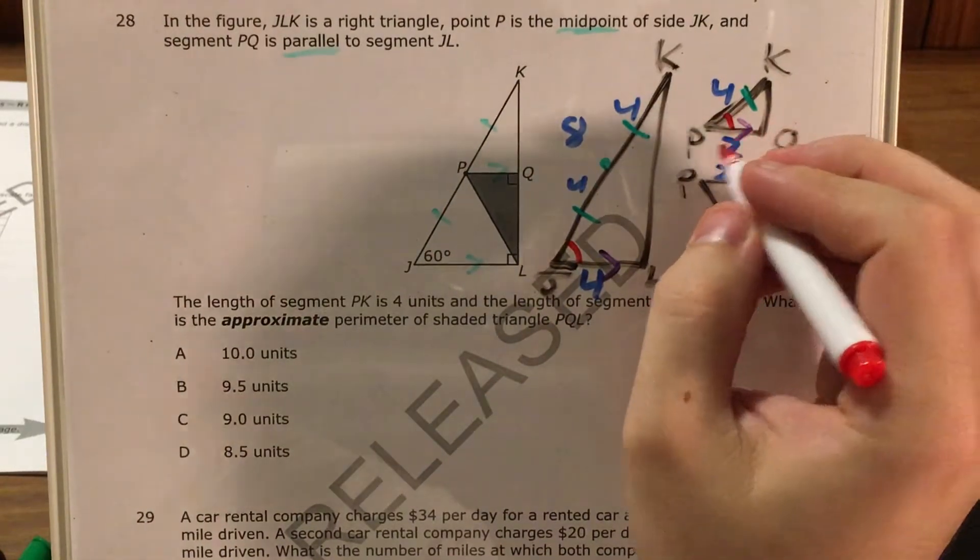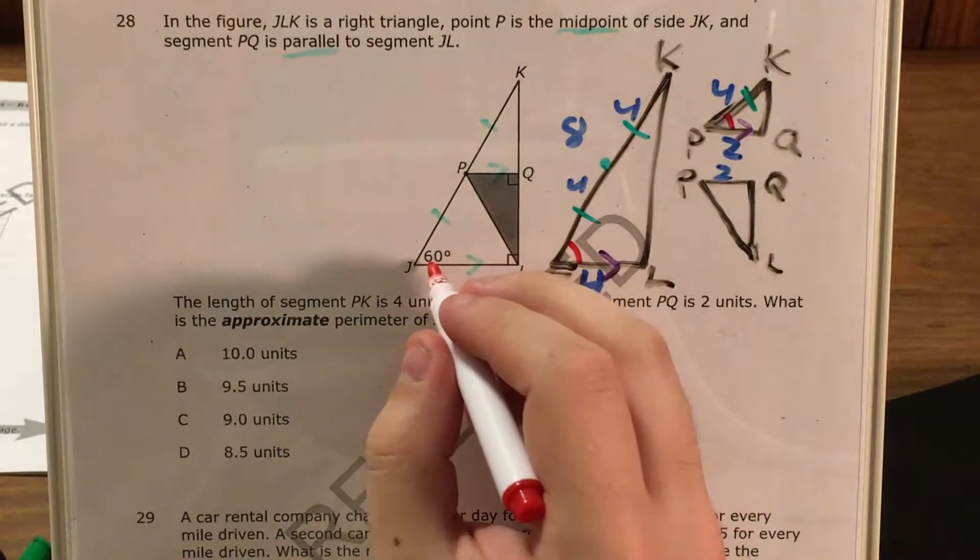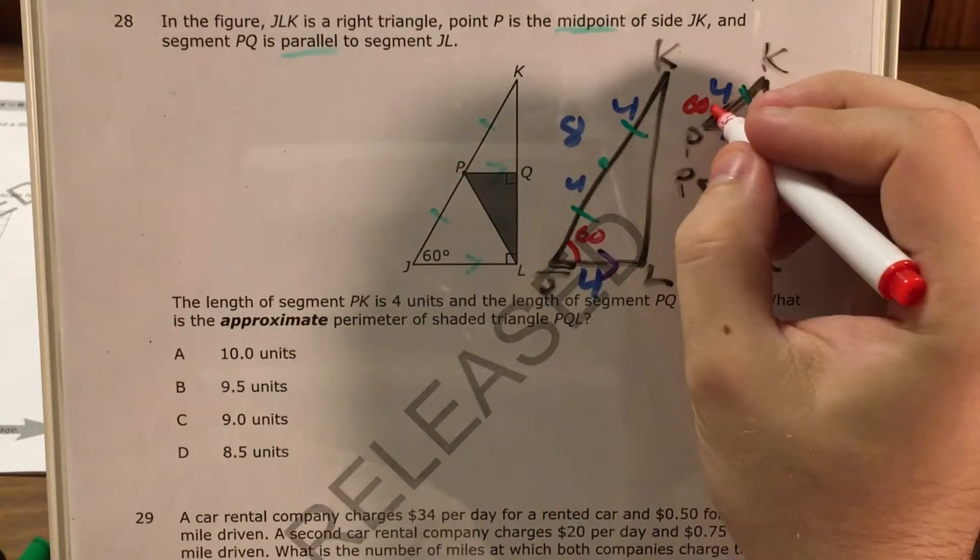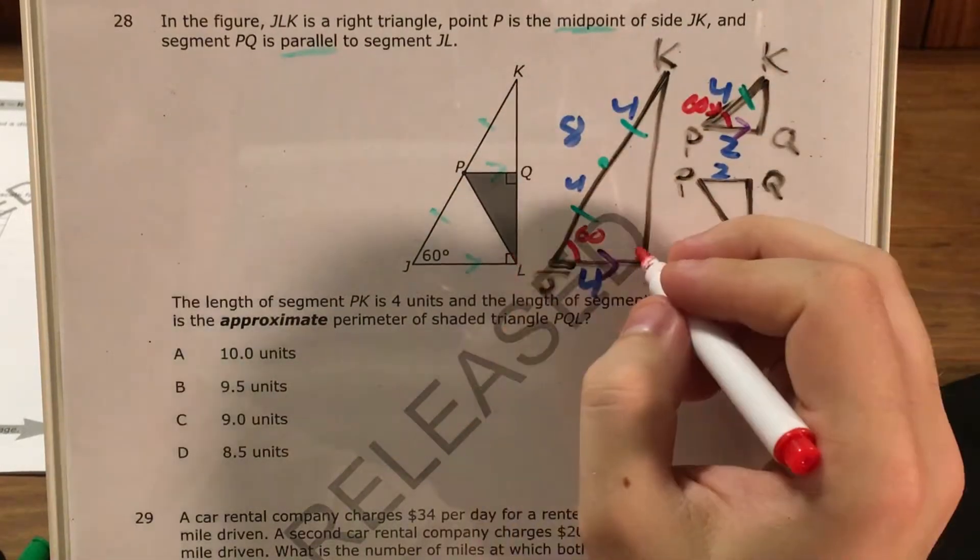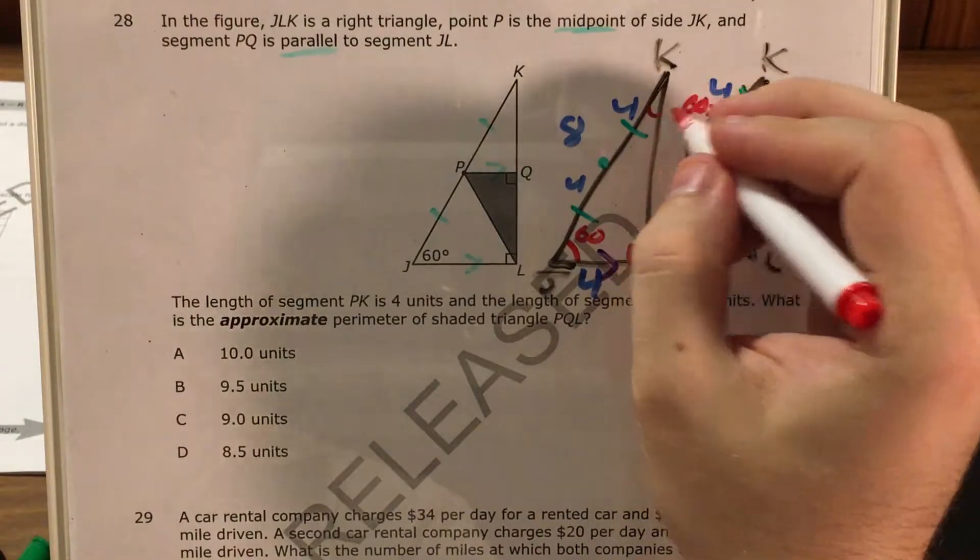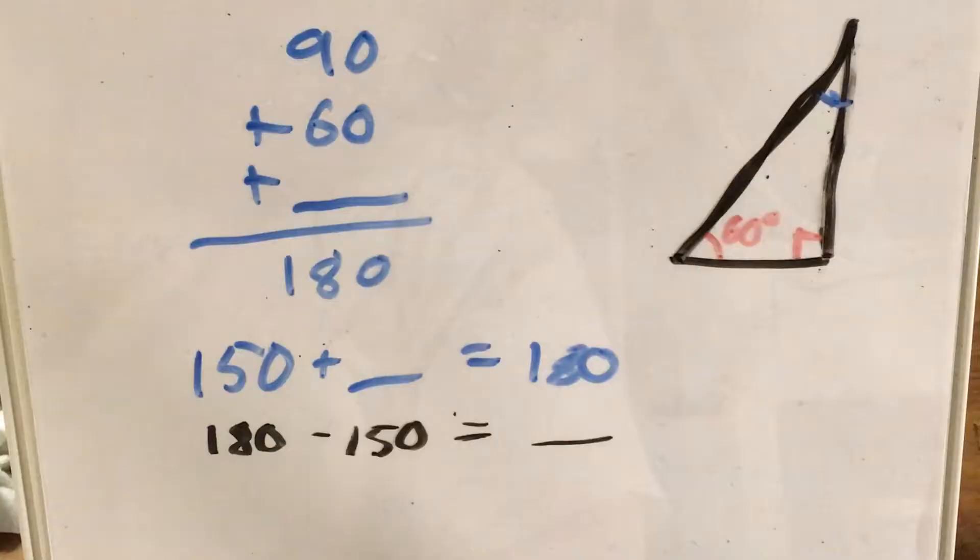The angles that are in the same place on the big triangle and the little triangle are gonna have the same degrees. So if this one's 60, that one's 60 as well. If this one is a right angle, this one's a right angle, which means that both of these are gonna have all the leftover degrees.